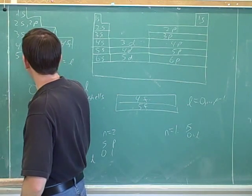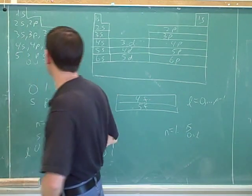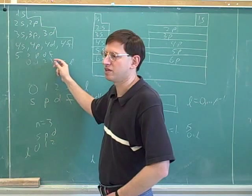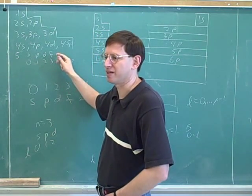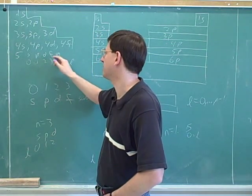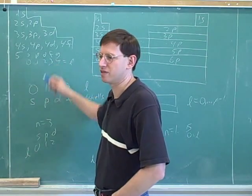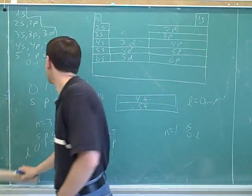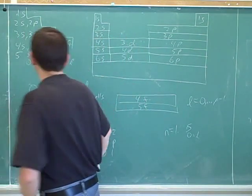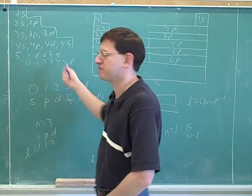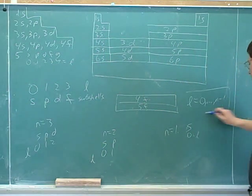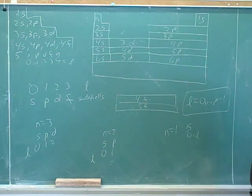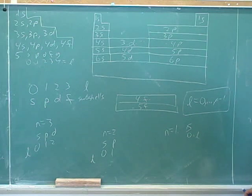The letter designations would be s, p, d, f — and people don't usually give a letter to the next one, but it would be G. From this point on you just start using the alphabet. The way the textbook puts it is: L goes from zero to n minus one. The key point is that the number of possible subshells always equals the shell number n.